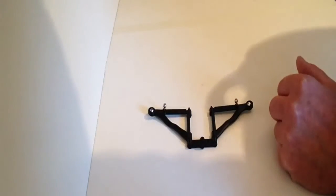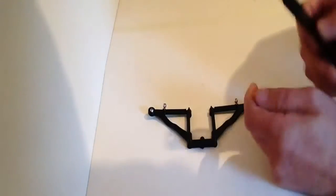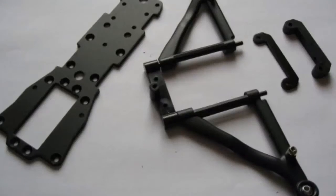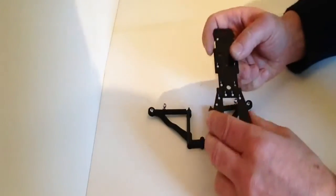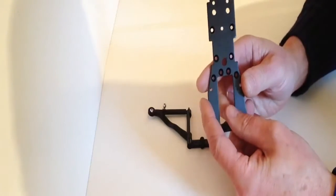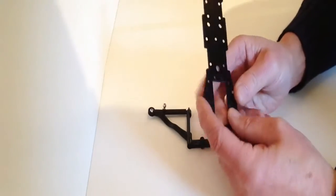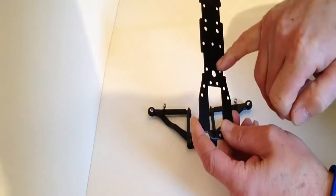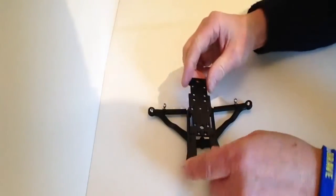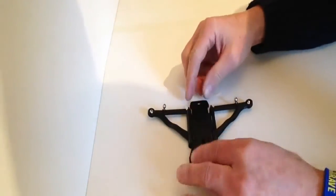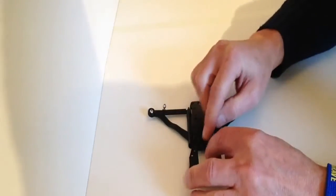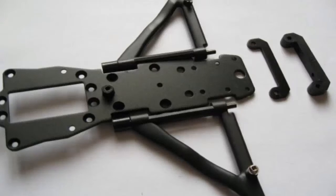Now take the lower chassis from issue 5 and we're going to place this over the top. Notice the countersunk holes. You're mainly looking for these here and we're going to place that over the top like so, so that the mount actually protrudes through the top.